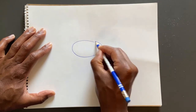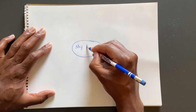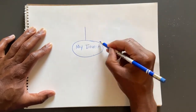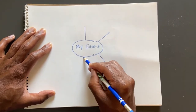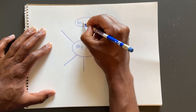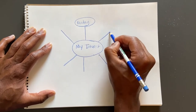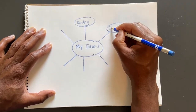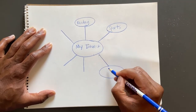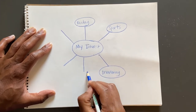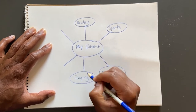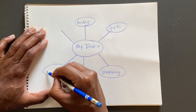First, let's create an idea map of things that interest you. Start by drawing an oval in the middle of the page and writing 'my interest.' Draw a few lines from the center and add an oval at the end of each line. Include your interest on the inside of the ovals.